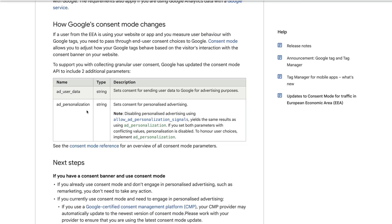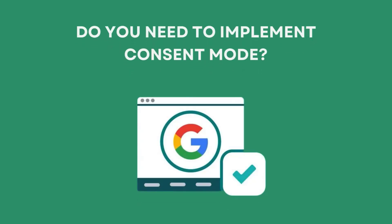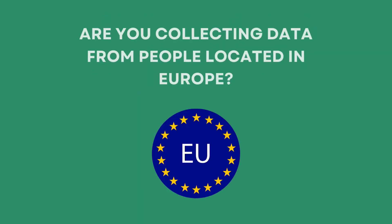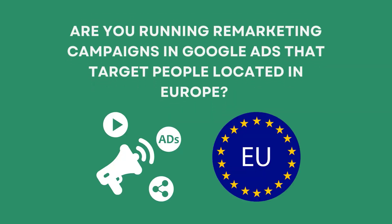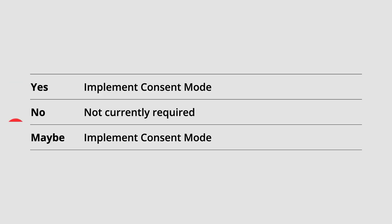Now that I've covered the difference between consent mode V2 and the previous version, I'm going to answer the top questions about consent mode. First up, do you need to implement consent mode? I recommend asking yourself the following questions: Are you collecting data from people located in Europe? This includes collecting data into Google Ads and Google Analytics. And are you running remarketing campaigns in Google Ads that target people located in Europe? If you answered yes to either of these questions, then you need to implement consent mode. If you answered no, but you might in the future, then you should also consider implementing consent mode sooner rather than later.